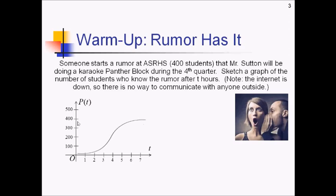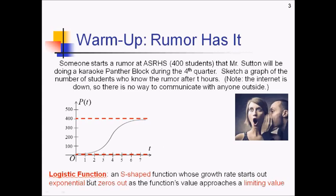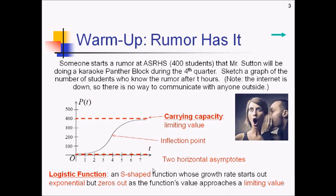We could say that then there is an asymptote at 400. And if you think about it, there must be one at zero as well, because as you go back in time, you're never going to be able to get below zero students knowing this rumor. This is called a logistic graph. This is an S-shaped function whose growth rate starts out exponential, but then zeroes out as the function's value approaches some limiting value. That limiting value, 400 in this particular problem, is called the carrying capacity. Other key features: halfway between the two asymptotes, half of the carrying capacity around 200, we have an inflection point. And we have two horizontal asymptotes on this graph.